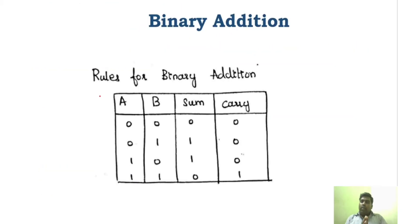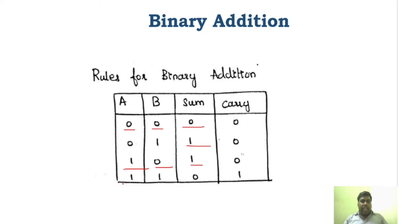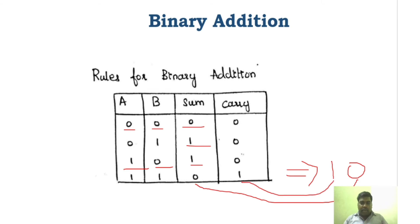For binary addition, this is the rule — a very simple rule. If you have 2 bits: 0 plus 0 is 0, 0 plus 1 is 1, 1 plus 0 is 1, and 1 plus 1 gives sum 0 and carry 1. Nothing unusual — 0 plus 0 is 0, 0 plus 1 is 1, and 1 plus 0 is 1.